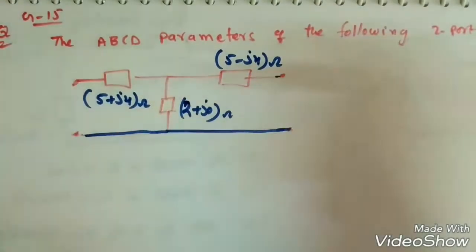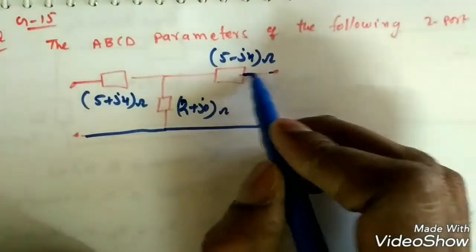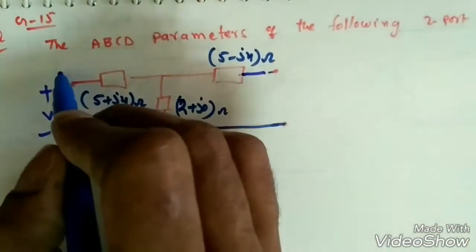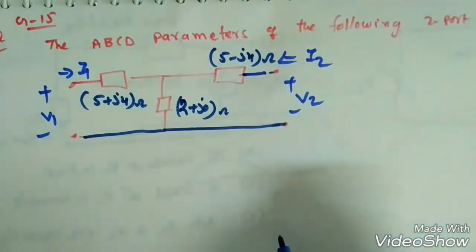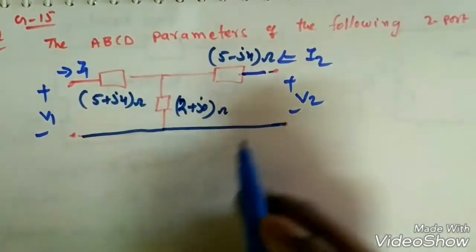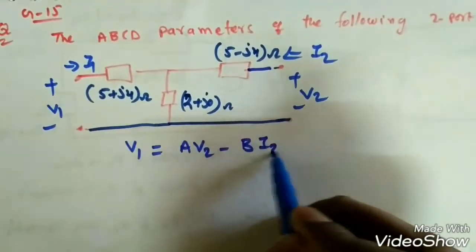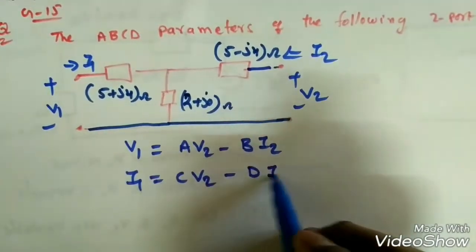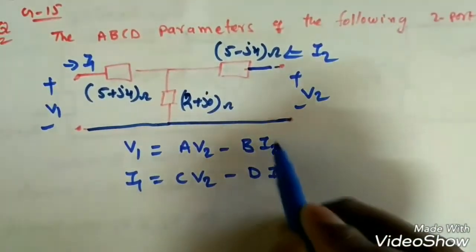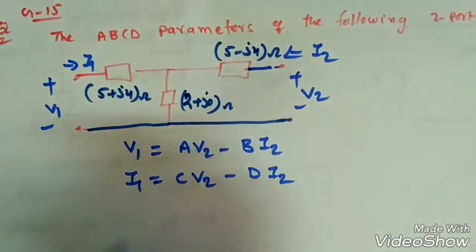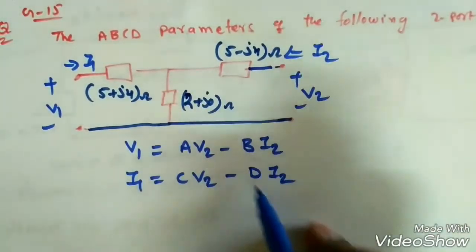To solve for ABCD parameters, we can use two methods. The standard procedure uses: V1 = AV2 − BI2, and I1 = CV2 − DI2. We can apply KVL and derive equations, or first make I2 = 0 to find A and C, then make V2 = 0 to find B and D. I will use the KVL method — you can solve using the standard procedure.